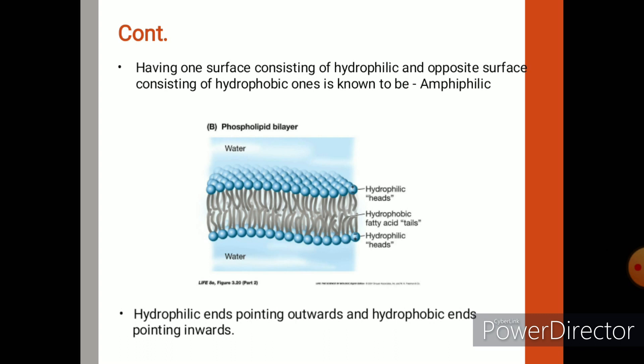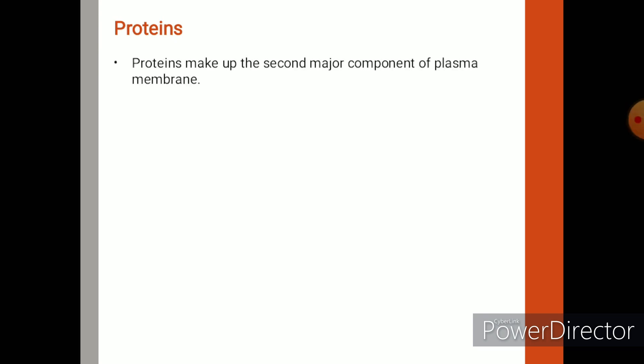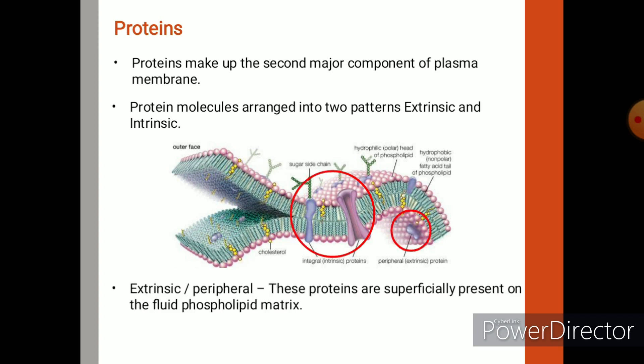This phospholipid layer helps give fluidity to the plasma membrane. Fluidity means the plasma membrane shows some movement, like waves in the ocean. This fluidity is a special feature of plasma membrane — it continuously moves just like waves. Along with phospholipid molecules, proteins also play a vital role in the cell membrane. These proteins are arranged in two patterns: extrinsic and intrinsic.